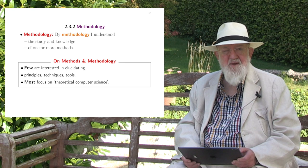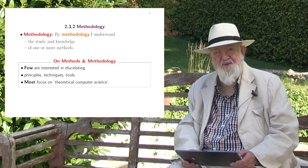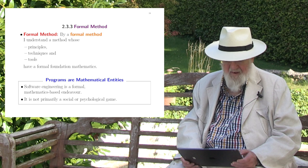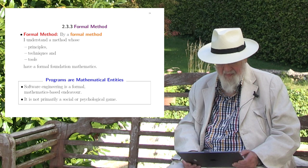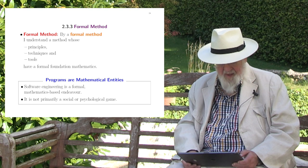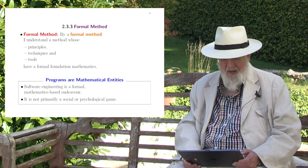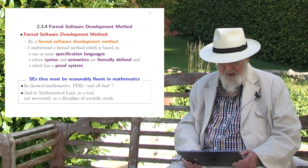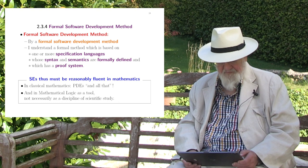By methodology, I understand the study and knowledge of one or more methods. So now a method by itself becomes the object that we study. Few are interested in understanding and elucidating principles, techniques and tools. Most focus on theoretical computer science. By a formal method, I understand a method whose principles, techniques and tools have a formal foundation in mathematics. So software engineering is a formal mathematics-based endeavour — it is not primarily a social or psychological endeavour. By formal software development, I understand one in which one or more specification languages have a formal syntax, a formal semantics, and a formally defined proof system.